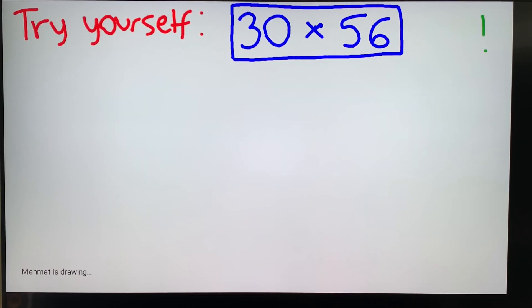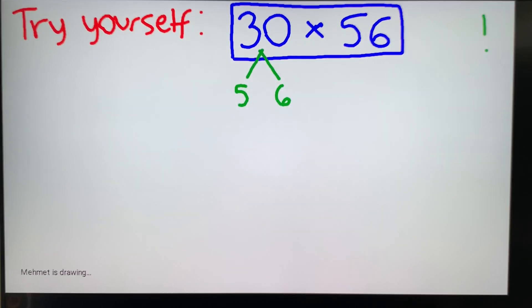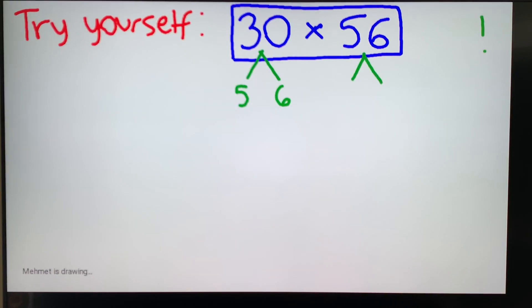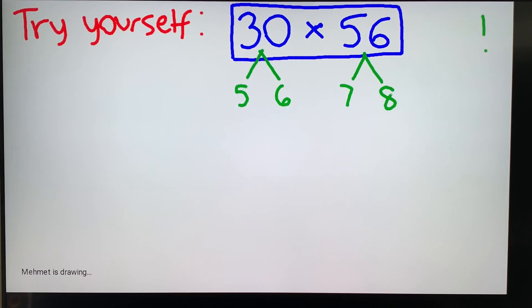So to begin solving this problem, we can factor 30 into 5 times 6, and then 56 into 7 times 8. Once again, we notice there's consecutive numbers.